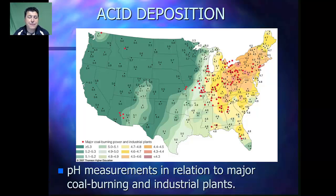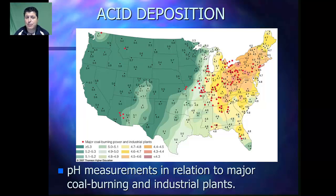If we look at a map that shows the average pH of acid deposition across the United States, we see that the areas of greatest pH depression take place in locations where we have a lot of coal burning and industrial plants that are producing those chemicals that contribute to acid deposition.